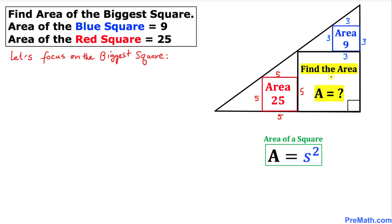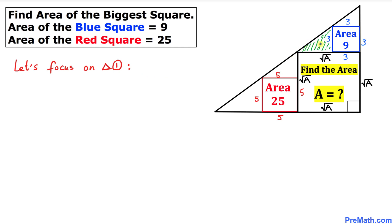Now let's focus on the biggest square. We want to find its sides. We know the area is s squared, so taking the square root of both sides, each side is going to be square root of a. So all four sides of this big square are labeled as square root of a.